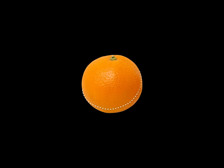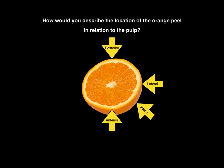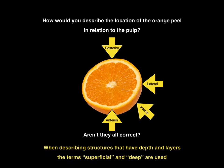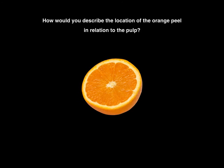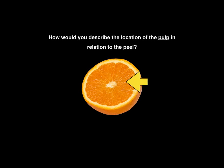Let's take a little tangent and look at this orange. How would you describe the location of the orange peel in relation to the pulp? You might say the orange peel is anterior, or posterior, or lateral, or inferior to the pulp — and aren't they all correct? That's why when describing structures that have depth and layers, the terms superficial and deep are used. The peel is superficial to the pulp, and the pulp is deep to the peel — and it doesn't matter where we're talking about the pulp; it's always deep to the peel.